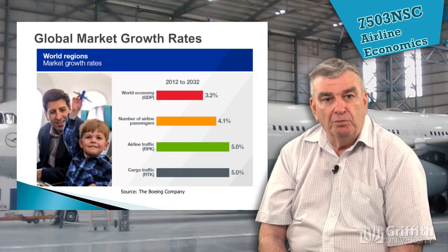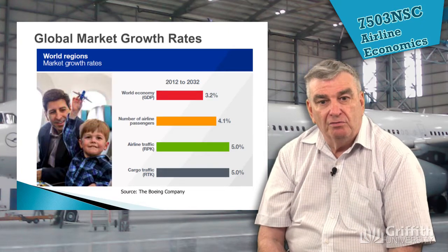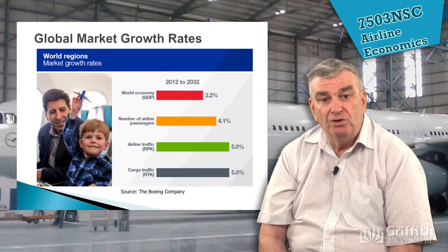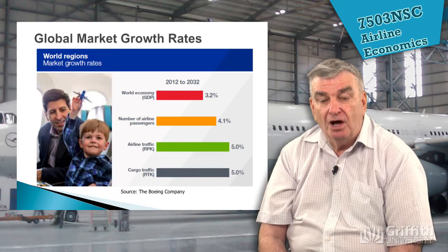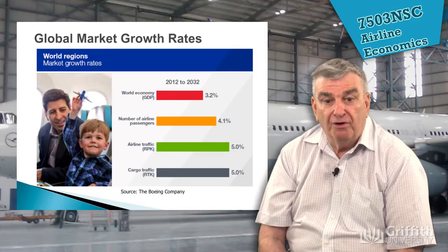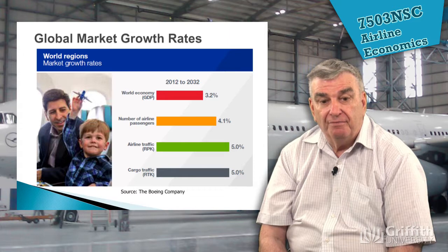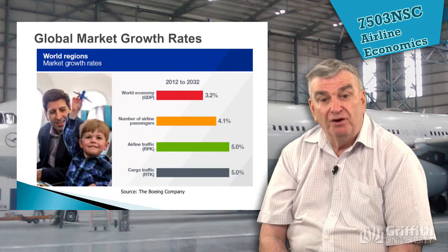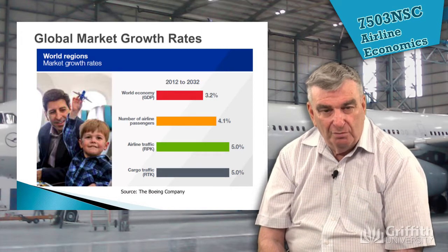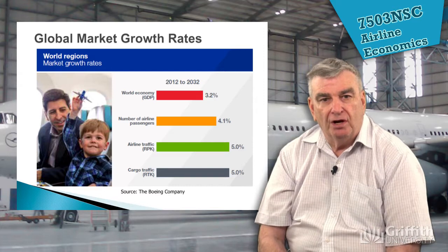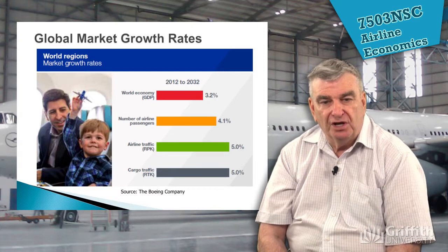Looking at global market rates, the world economy is predicted to grow by an average of 3.2% a year out to 2032. The number of passengers is going to grow even greater than GDP, and airline traffic growth is expected to increase by 5% per year overall. Cargo traffic is also going to increase by 5%. These predictions come from Boeing, which will obviously put an optimistic view on it because they want to sell aircraft, but the figures show a remarkable future for air travel.